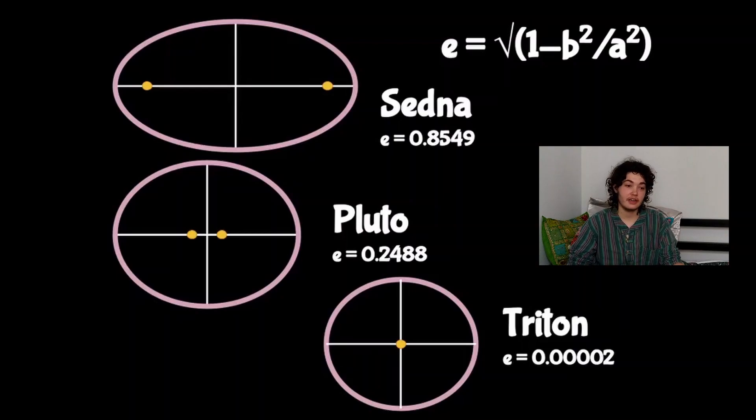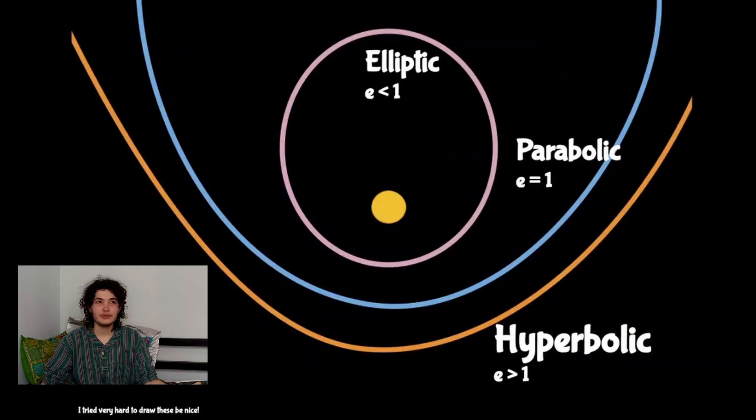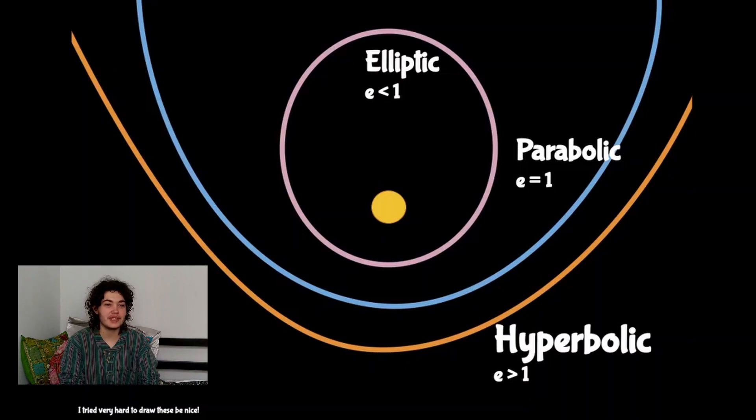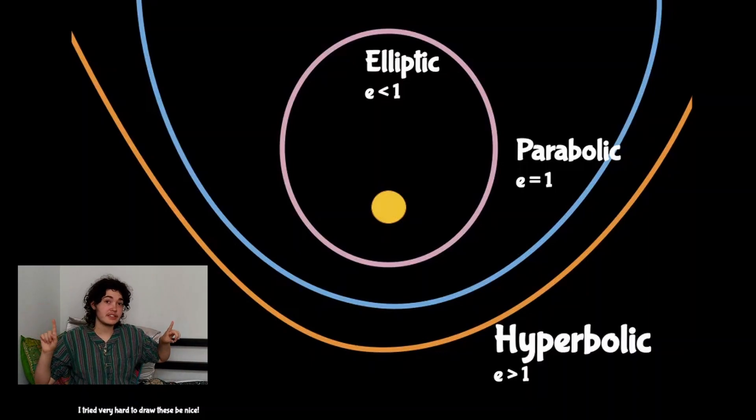Another thing that Kepler might not have known, or is sort of an extension to the ellipse shape first law, is that there are other shapes although they're not exactly the standard orbit which is an ellipse. You've also got parabolic orbits where the eccentricity equals 1, and then you've got the hyperbolic orbits where the eccentricity is much greater than 1. I've tried my best to draw these and they're not exactly perfect, but you can also look up the orbit shapes on Wikipedia as well. There's a really good diagram made by someone there.